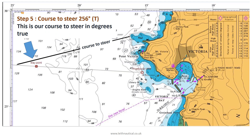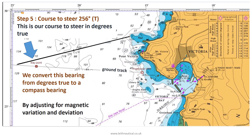The bearing of this line will be our course to steer in degrees true — in this case 256 degrees. All we need to do now is to convert this bearing from degrees true to a compass bearing, and we can do this by adjusting for magnetic variation and deviation.